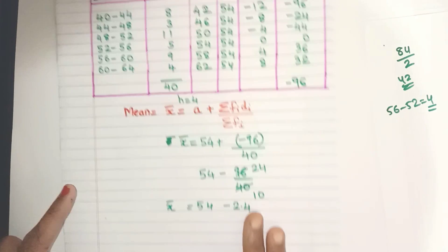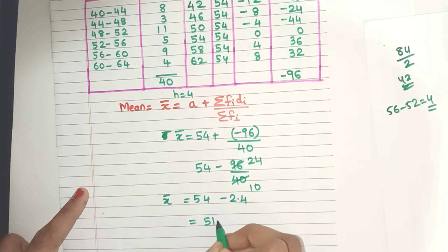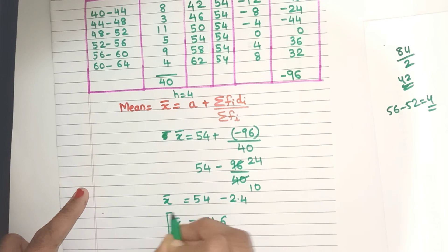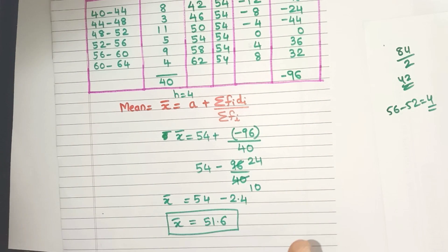So my mean is this. Now 54 minus 2.4 is yes, 51.6. So friends, this is how you can easily find the mean.